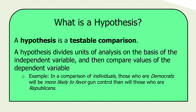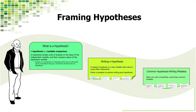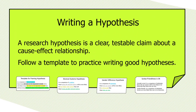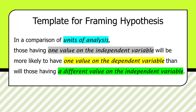Here's a template that will never steer you in the wrong direction. If you use this template to frame a hypothesis you may get awkward syntax, but you'll always get a workable statement that you can frame and test. In a comparison of whatever you're studying — the units of analysis — those having one value of the independent variable will be more likely to have one value of the dependent variable than those having a different value of the independent variable.